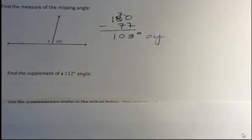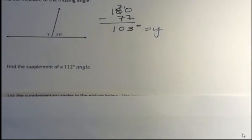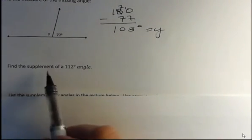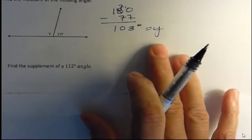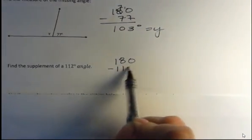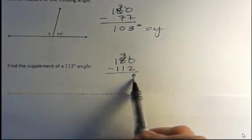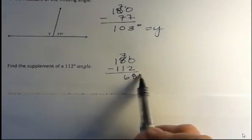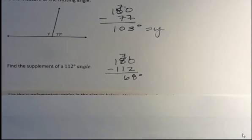Find the supplement of a 112 degree angle. Well, all we have to do, again, if they ask you to find the supplement of something, is to subtract from 180. 180 minus 112, and we have 8 and 6, 68 degrees. 68 degrees is the supplement of a 112 degree angle.